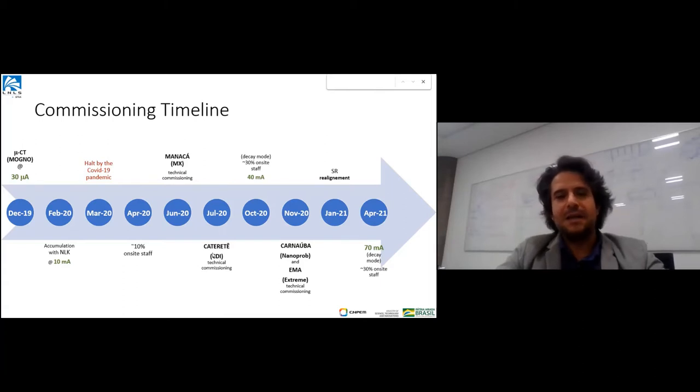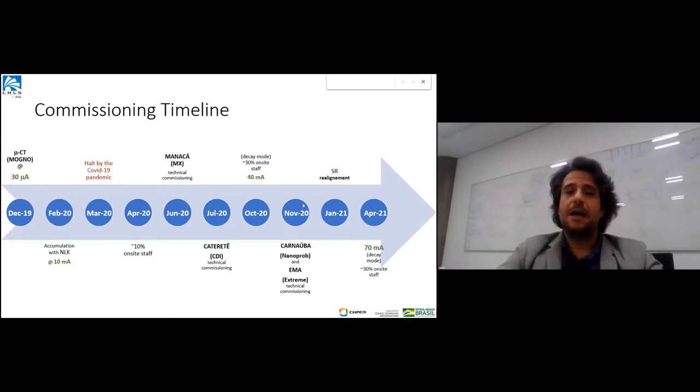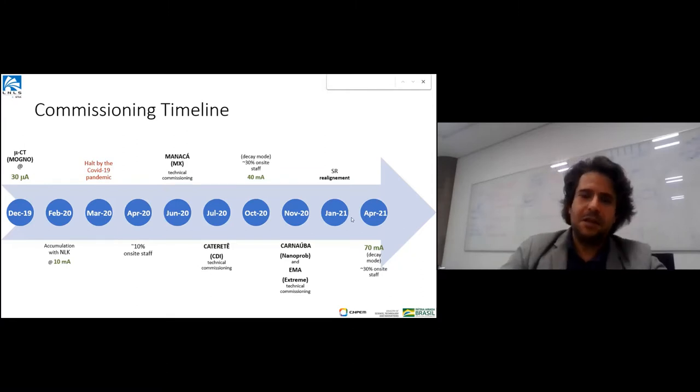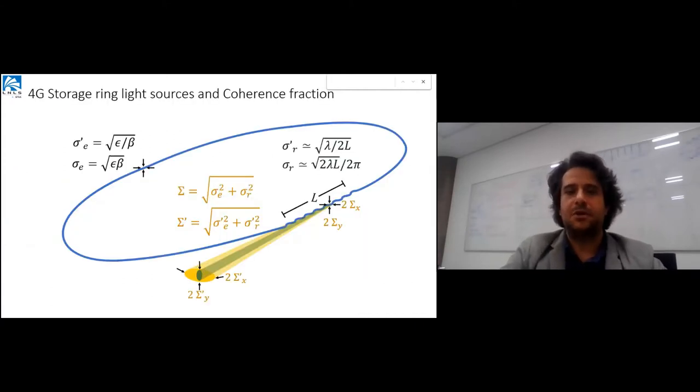By July 2020, we had the first technical commissioning of the coherent diffraction imaging beamline. Since then, we've been ramping up the current and starting new technical commissioning of beamlines. Beginning of this year, we had a major realignment, and now we expect to work with 100 milliamps and start user commissioning.